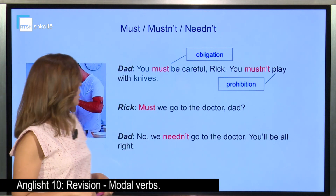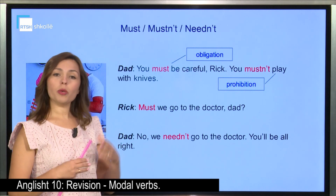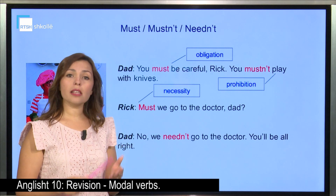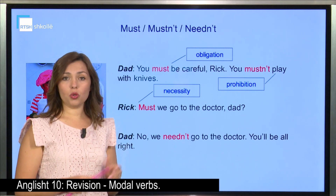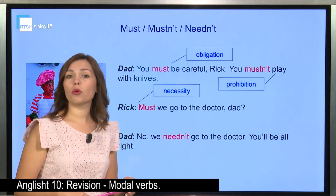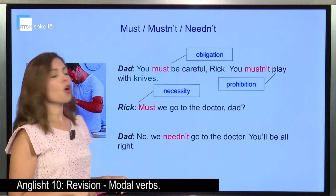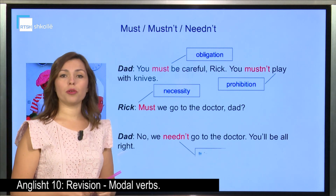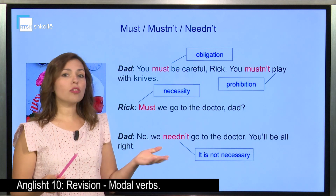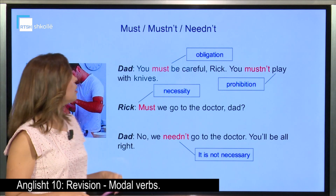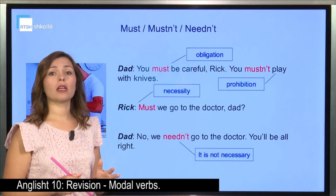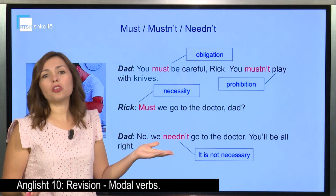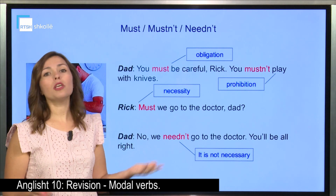Rick is asking his dad: 'Must we go to the doctor, dad?' This shows necessity — is it necessary for me to go to the doctor? And dad says, after taking a look at his finger, it's fine: 'No, we needn't go to the doctor. It will be all right.' The word 'needn't' shows lack of necessity — it's not necessary to go to the doctor. So: 'must' is something strong, should be done; 'mustn't' is strong, shouldn't be done; and 'needn't' is when it's not necessary — you can do it, but it's fine even if you don't.